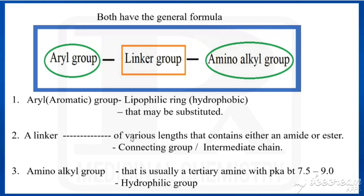The linker connects the two groups. The link may vary in length but contains either an amide or ester, and is otherwise called the connecting group or intermediate chain. The third part is the amino alkyl group, which is usually a tertiary amine with a pKa between 7.5 to 9, and it is the hydrophilic region. So the aryl group is the lipophilic region and the amino alkyl group is the hydrophilic region, connected by the linker.